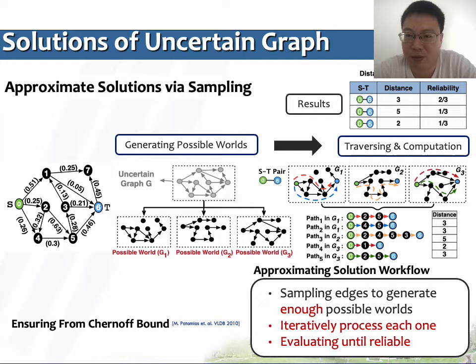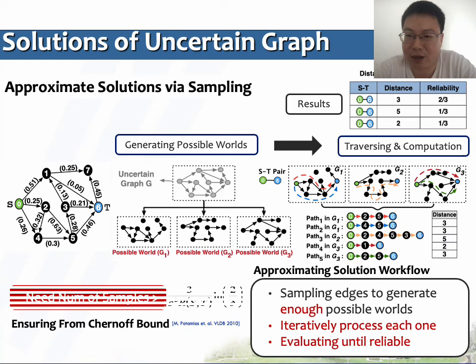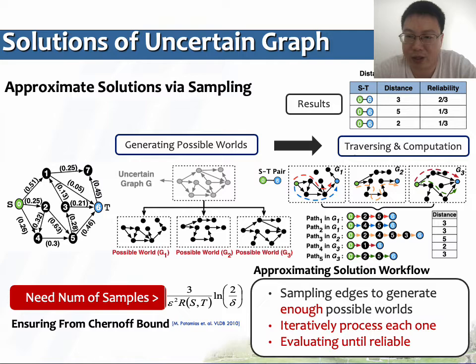Previous work has sought approximate solutions to optimize the complexity of uncertain graph problems, making the complex computation practical. They achieve reliable results by sampling adaptive amounts of samples, with no need to generate all possible worlds from one uncertain graph. They ensure the final result is reliable by calculating from a sufficient number of possible worlds via a Chernoff bound. The basic idea is to adopt Monte Carlo to recursively sample the existence of each edge many rounds, then evaluate the generated graphs until a reliable result is achieved.